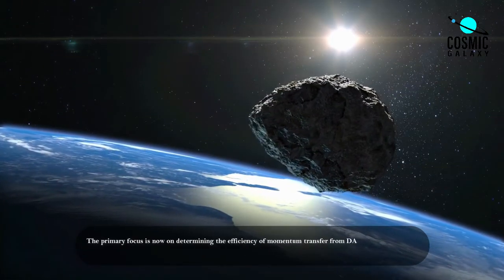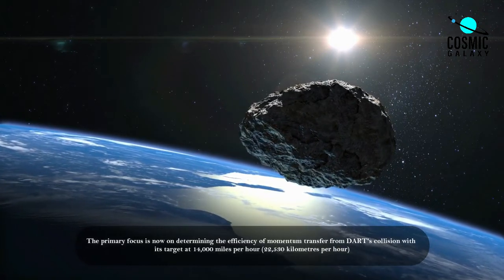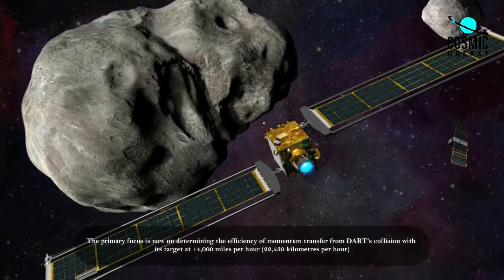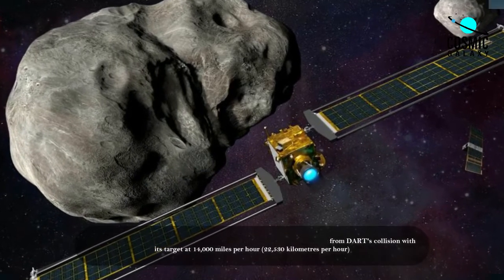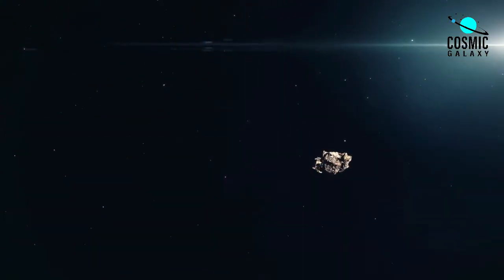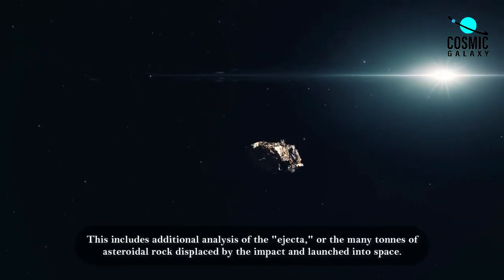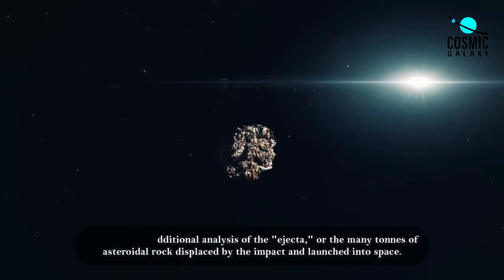The primary focus is now on determining the efficiency of momentum transfer from DART's collision with its target at 14,000 miles per hour, which is 22,530 kilometers per hour. This includes additional analysis of the ejecta, or the many tons of asteroid rock displaced by the impact and launched into space.